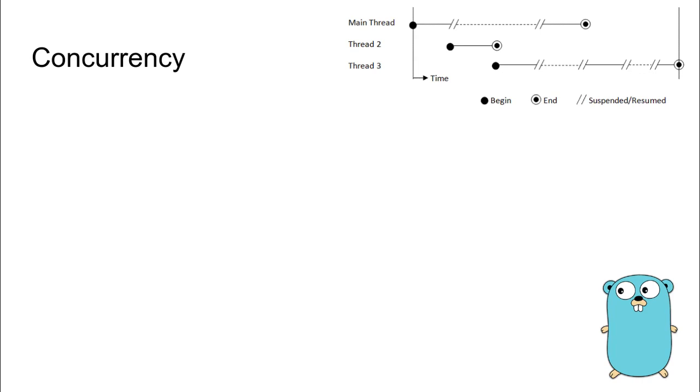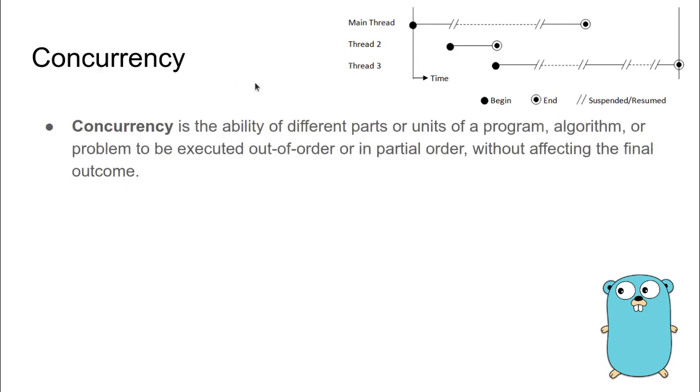Let us start our discussion by trying to understand what is concurrency. Concurrency is the ability of different parts or units of a program, algorithm, or problem to be executed out of order or in partial order without affecting the final outcome of the program.